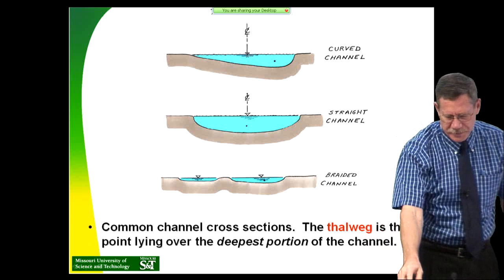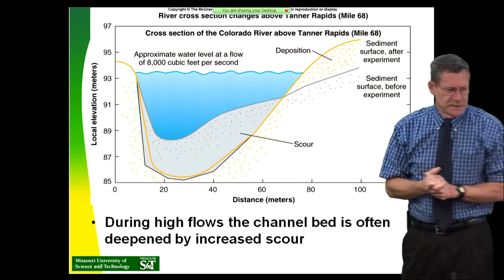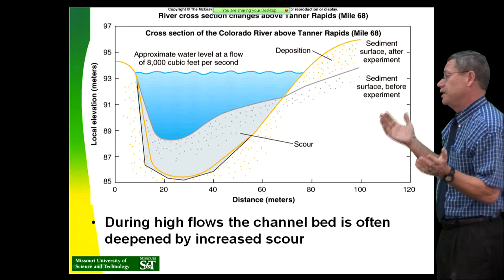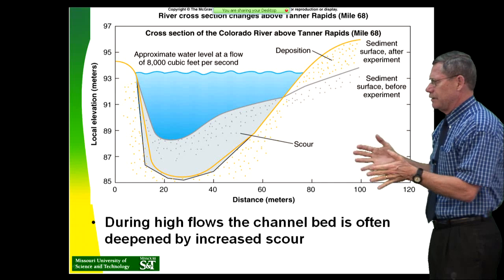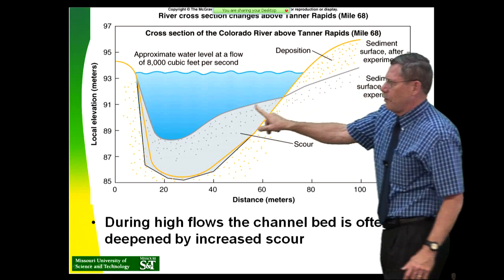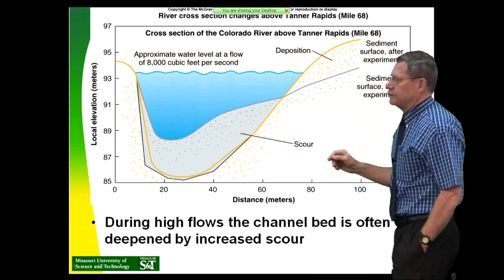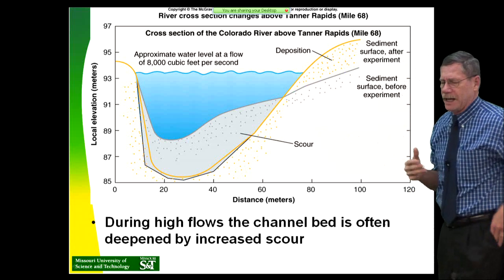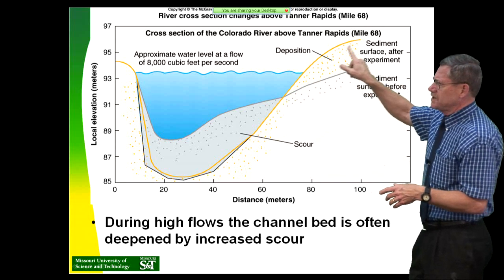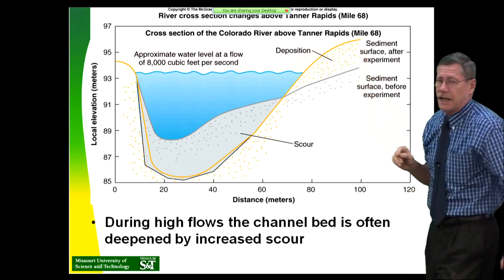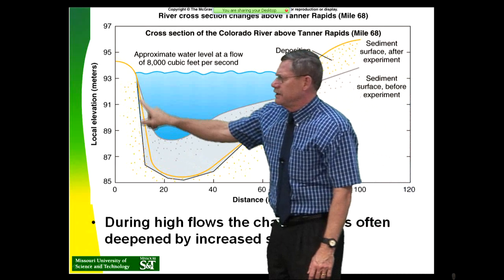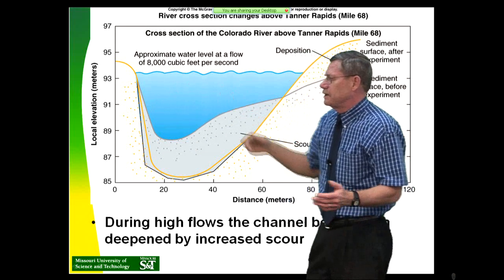Here's a good example: we're looking at a cross-section of the Colorado River in the Grand Canyon above Tanner Rapids, actually at mile 68 in upper Grand Canyon, downstream of the confluence with the Little Colorado. We're seeing a sediment position before a major release of water and after a major release. They're going to take Glen Canyon Dam and make larger releases of water for short periods of time to try and restore the sandbars that have been disappearing in the Grand Canyon since Glen Canyon Dam shut its gates back in March 1963.